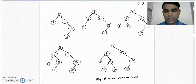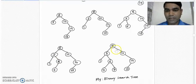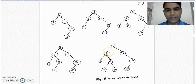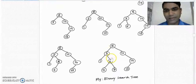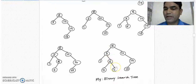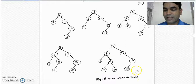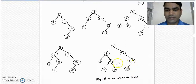The next element is 7. Compare it with root node 8 — it is less than 8, so it goes to the left subtree. It is greater than 3, so it goes to the right subtree of 3. It is greater than 6, so it goes to the right subtree of node 6. This is the final binary search tree for the given list of elements.